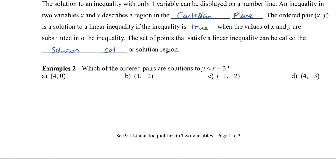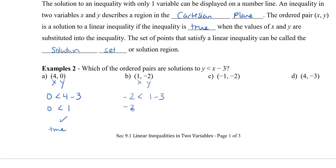Let's look at this example where y is less than x minus 3. We want to know if these four coordinates satisfy this expression. Remember, the first number is x and the second is y. Plugging in (4, 0): 0 is less than 4 minus 3, which gives 0 is less than 1 — that's true. For (1, -2): negative 2 is less than 1 minus 3, which gives negative 2 is less than negative 2 — they're equal, so this is false, meaning (1, -2) does not satisfy this inequality.